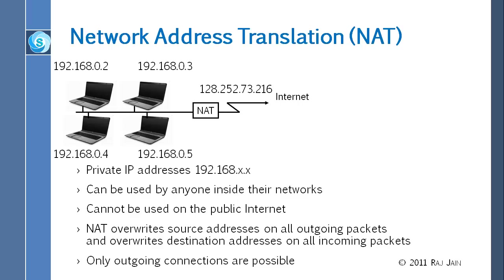All computers can be communicating on all ports at the same time. Hopefully not all 2 raised to 16 port numbers are exhausted simultaneously, because that would be a real problem. If you have a very large number of computers, you probably need more than one public address. With two public addresses, you maintain two separate NAT tables — one per address. One address is sufficient for small networks, but large networks need more.